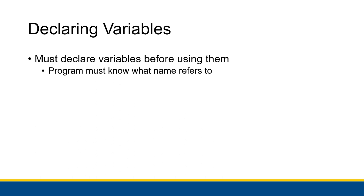When you declare variables, you must declare them before using them so the program knows what name refers to what memory address. If you don't declare it, Visual Basic will say it doesn't recognize what memory address the name is connected to and will give you an error. Usually Visual Studio is smart enough to recognize that you used a variable before declaring it and will tell you to write a declaration, but more on that in the option statement video.